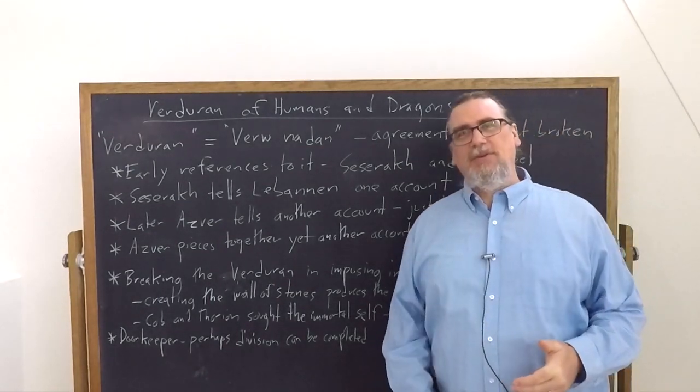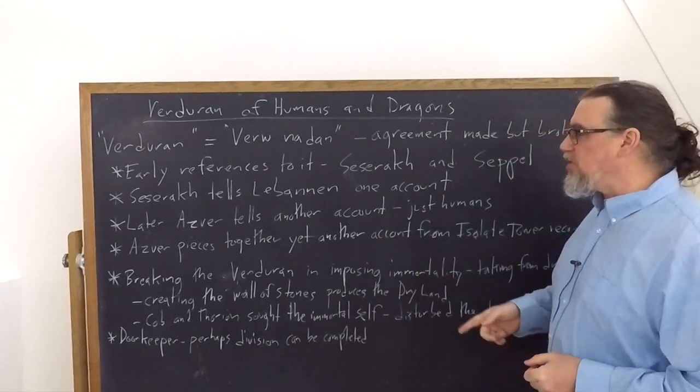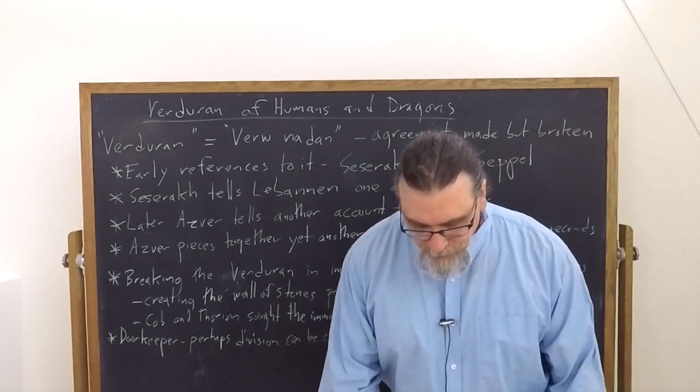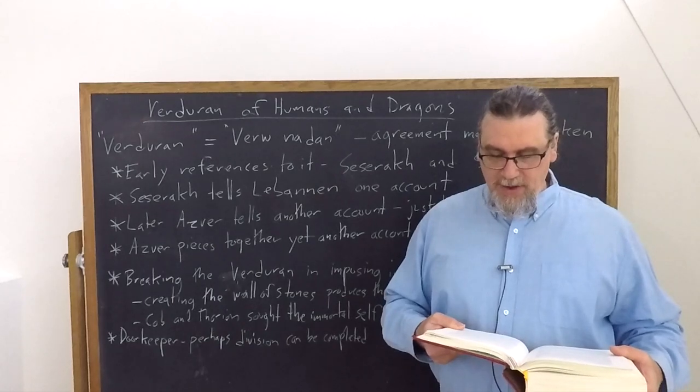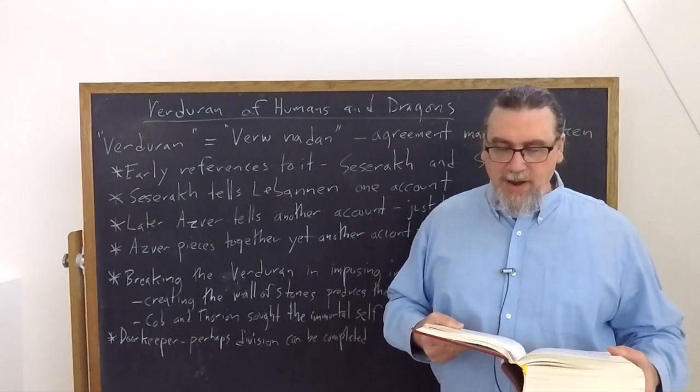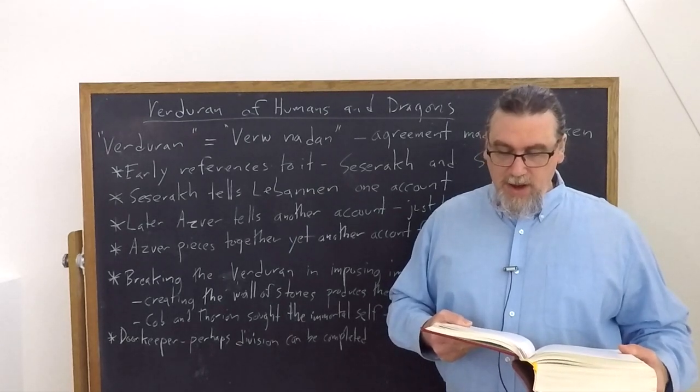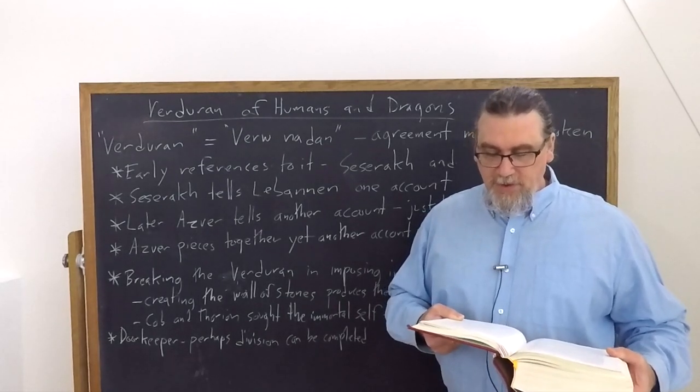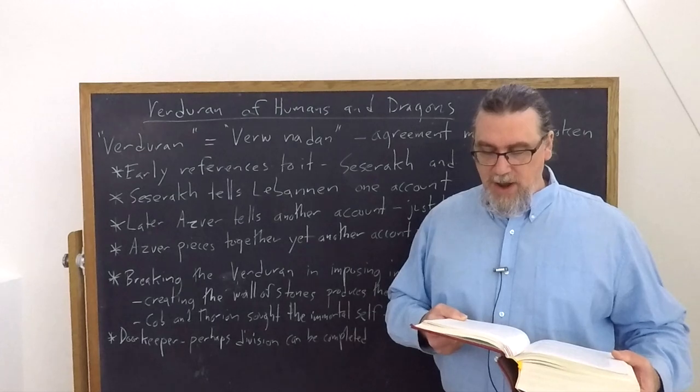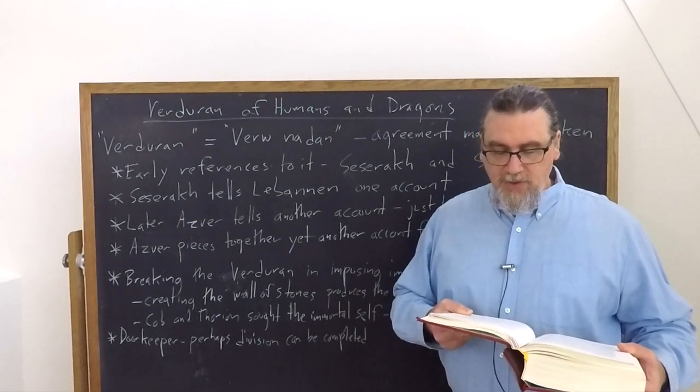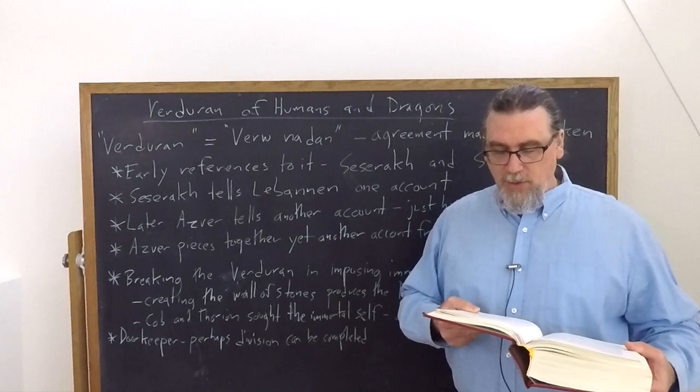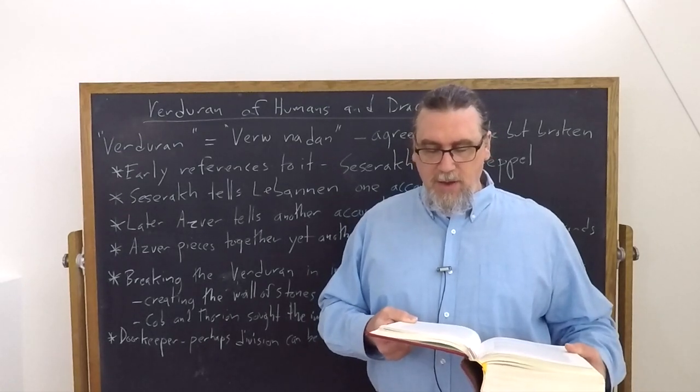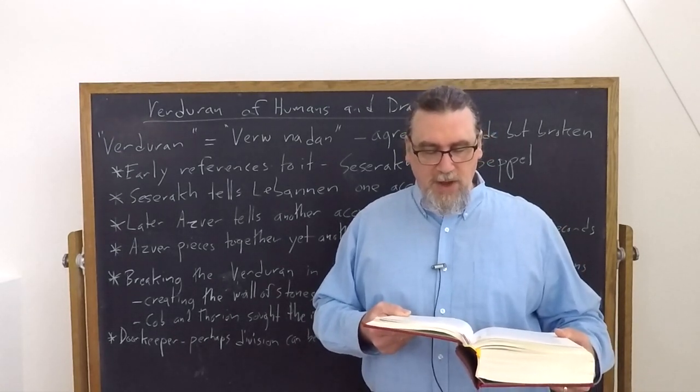The first reference is in the mouth of the Kargish princess talking to Tenar Seserok. They're talking about dragons and being reborn. Seserok says the story is about the accursed sorcerers discovering the Verduran. She says, I don't know what it was that told some people that if they'd agree never to die and never to be reborn, they could learn how to do sorcery. So they chose that, they chose the Verduran.